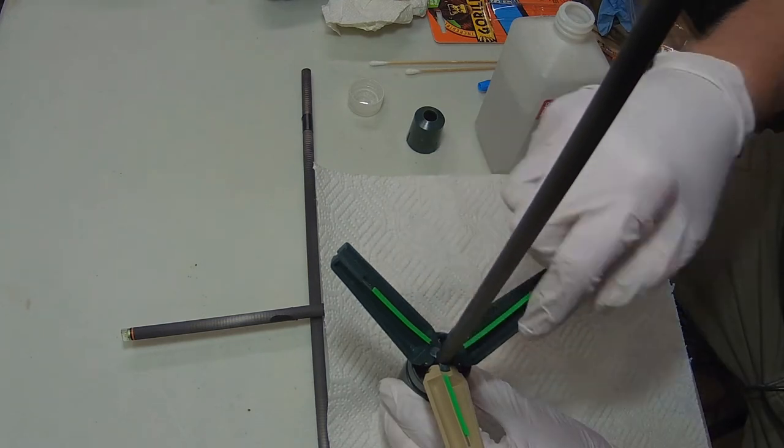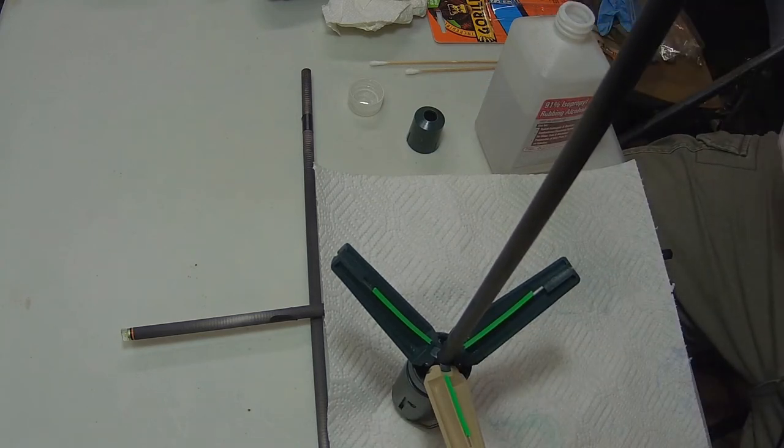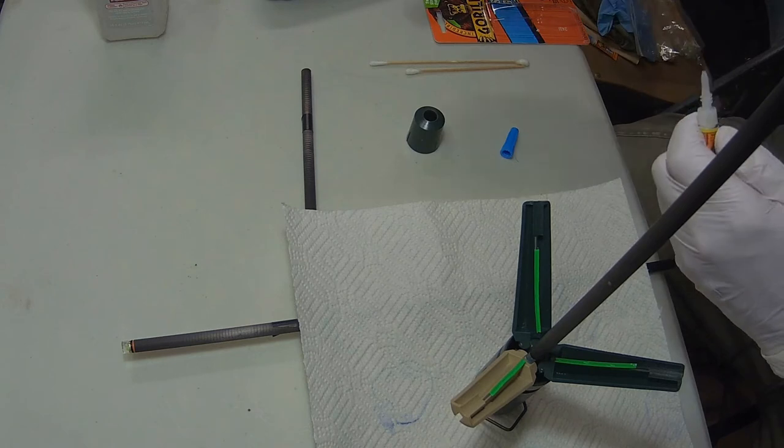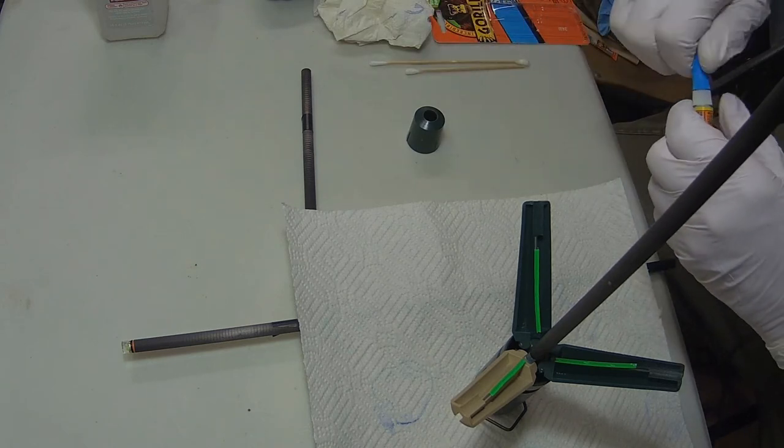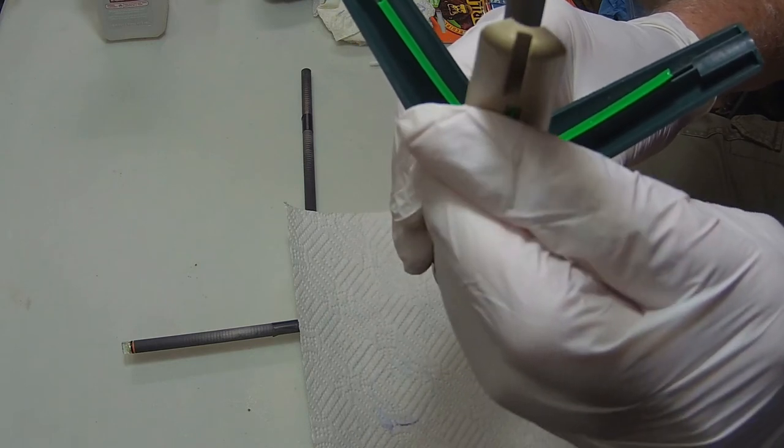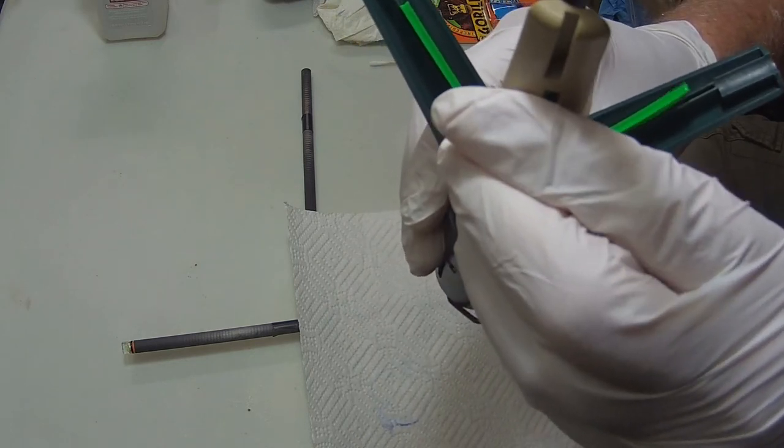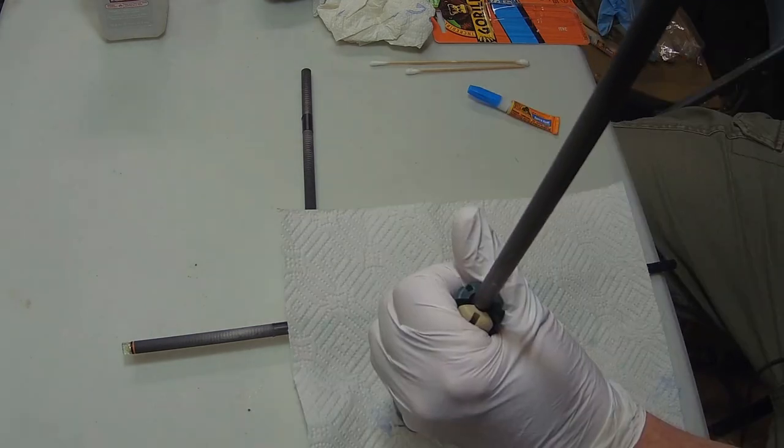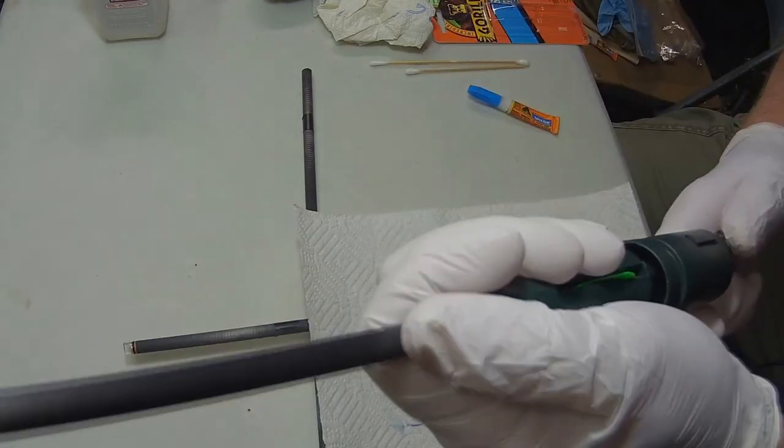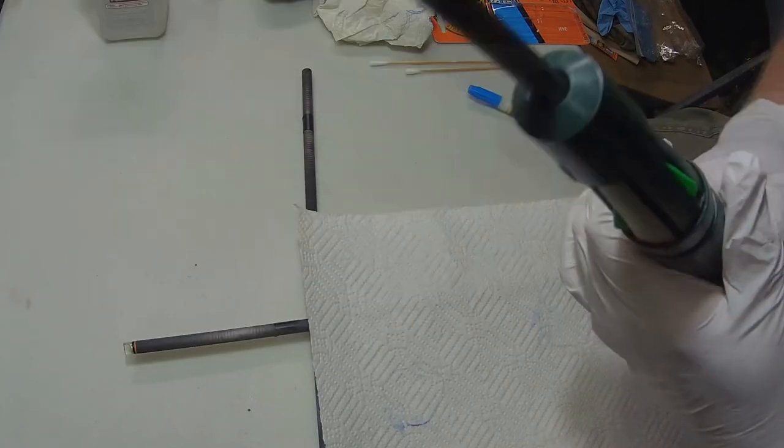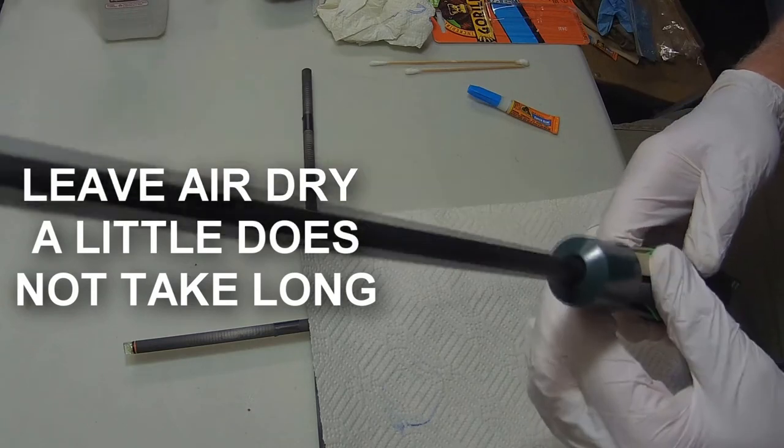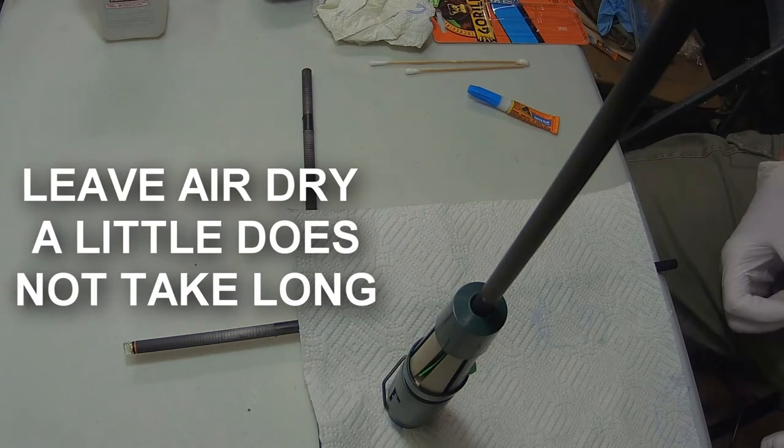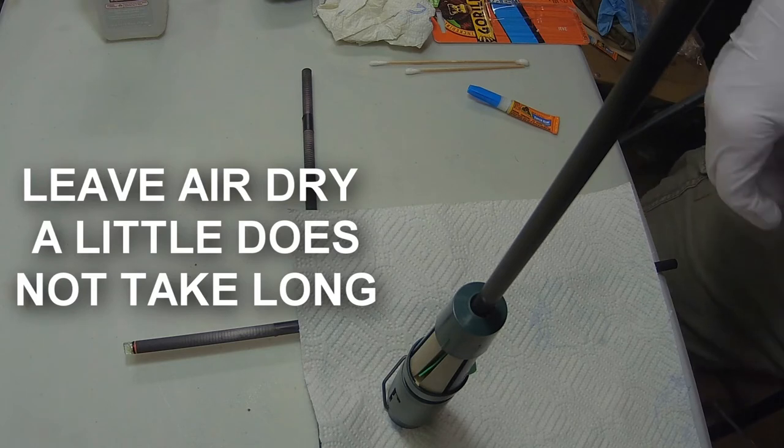Now before we start to add any glue, we want to make sure our vanes are down at the bottom. It doesn't take much. Wipe that tip off, put the cap back on, close the arms. Just ease it up real slow until it touches. Same way each one - ease them up slow. Put your cap down, take and release the bottom so it comes up, put the pressure on, and you leave it. You can leave it to air dry as long as you want to - it doesn't take real long, but we'll leave that to dry for a little bit.